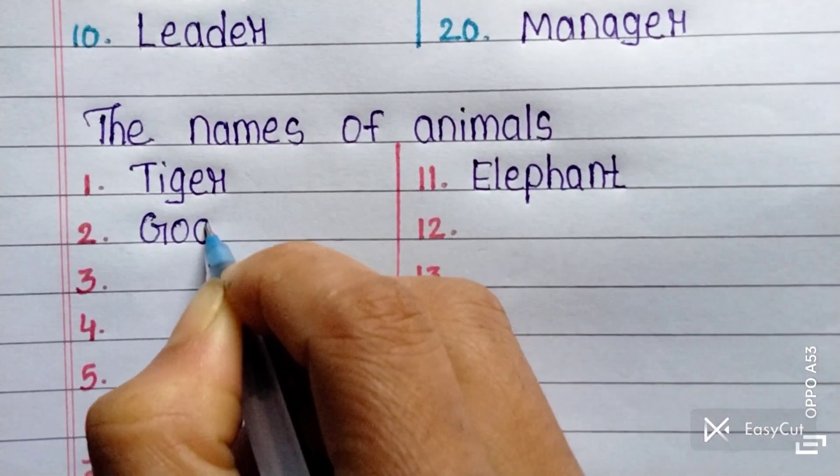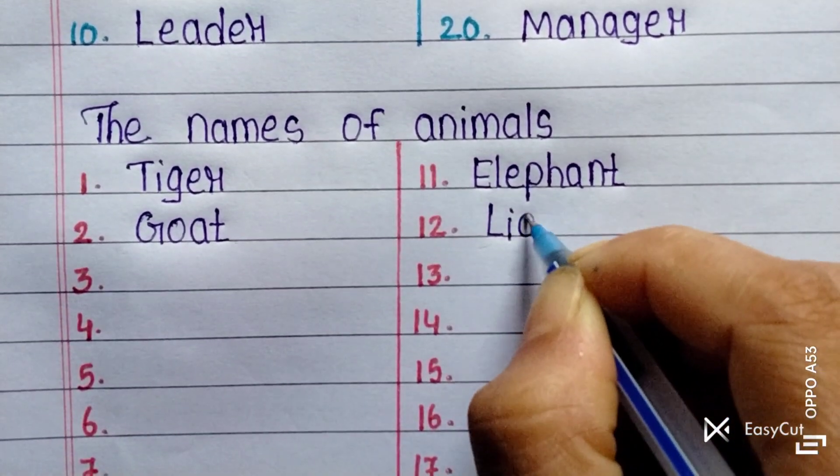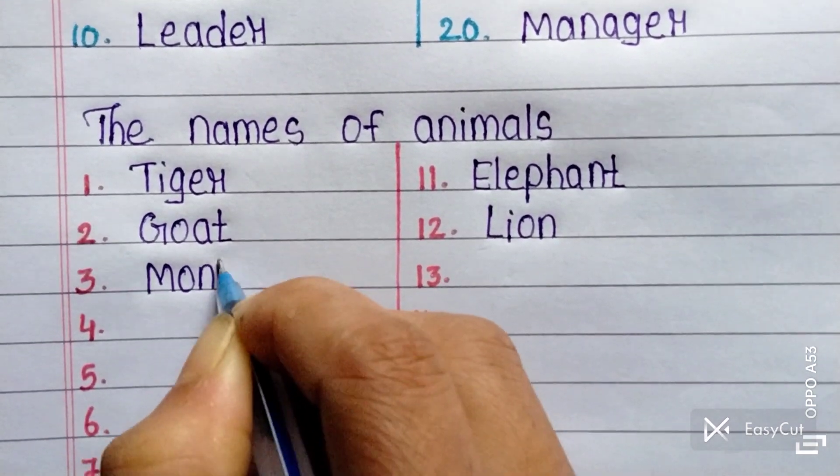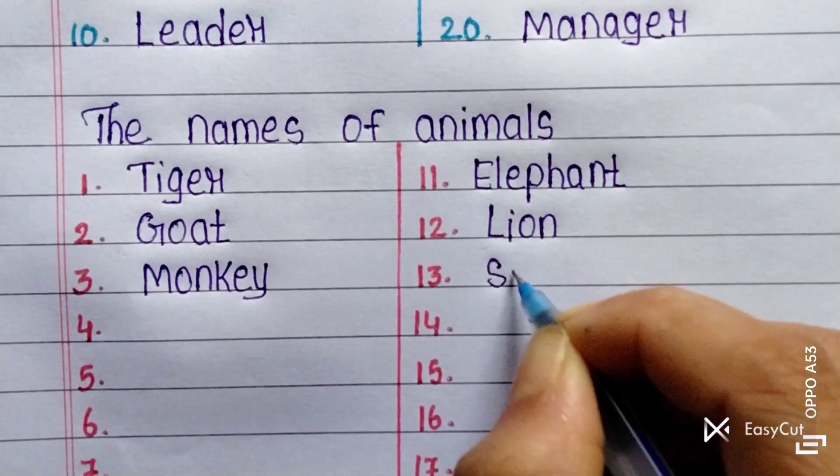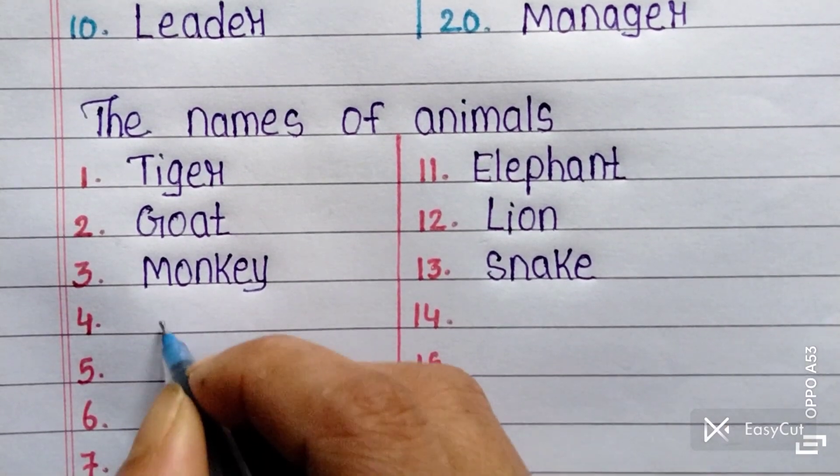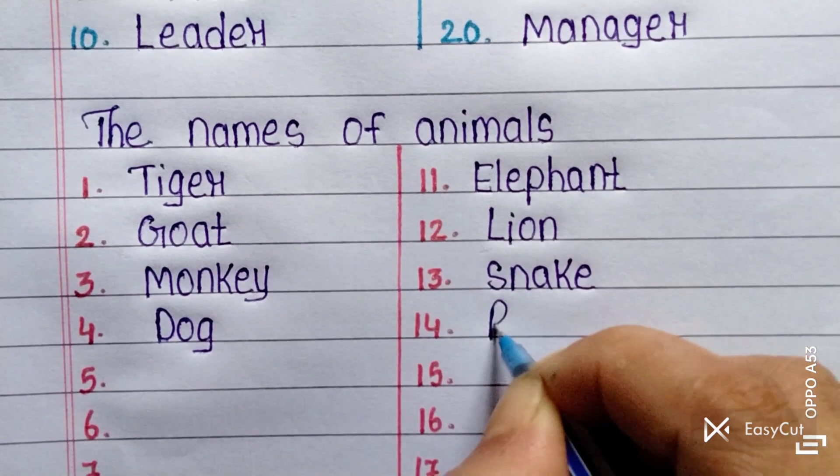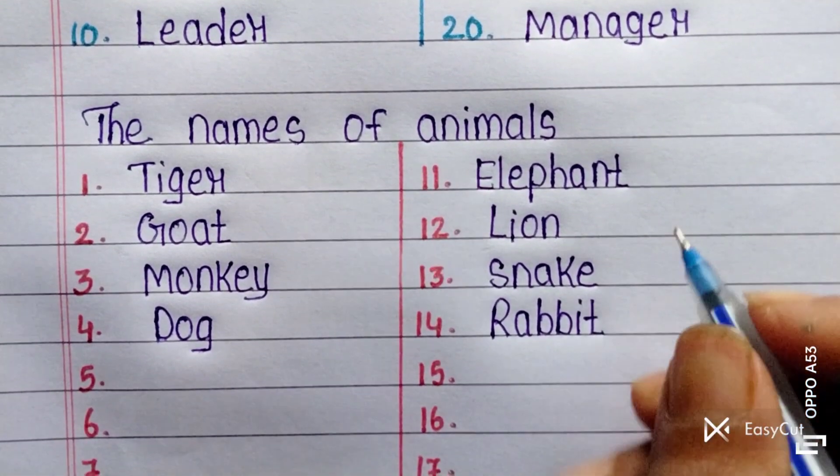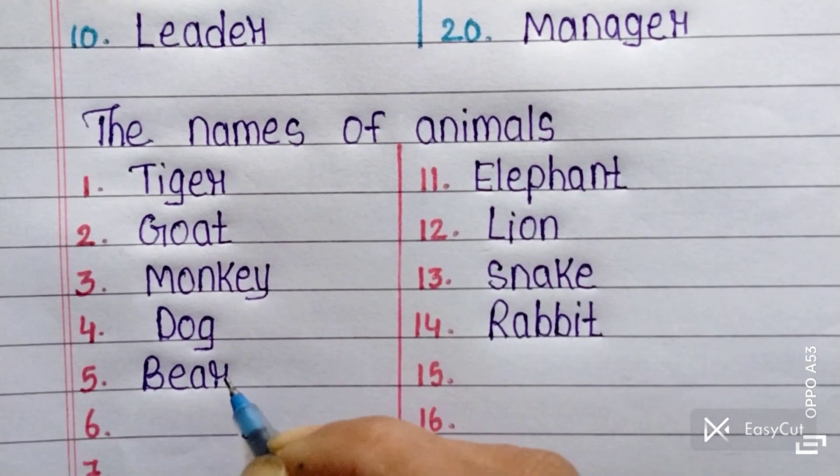Goat, lion, monkey, snake, dog, rabbit, bear.